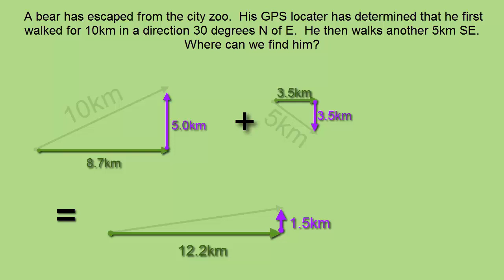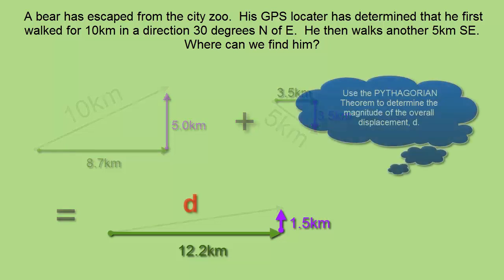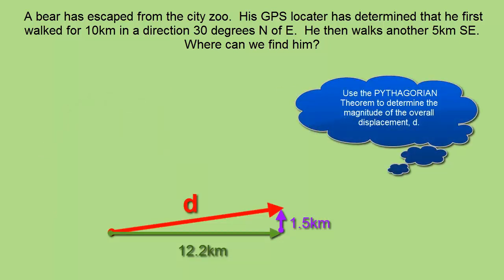Now remember the task was to figure out the overall displacement of the bear. And since we know the horizontal and vertical components of this overall displacement, it's simply a matter of the Pythagorean theorem to figure out the hypotenuse.